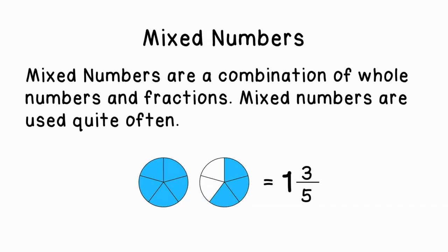So we need to convert an improper fraction into a mixed number. Mixed numbers are a combination of whole numbers and fractions, and they're used quite often. Take a look at this model: I have two fraction models here. One of them is completely shaded in — five fifths is the same as one whole. Next to it, we have another circle model cut into fifths, and three of them are shaded, representing three fifths. So together we have one and three fifths.